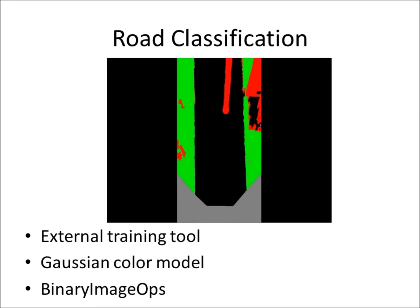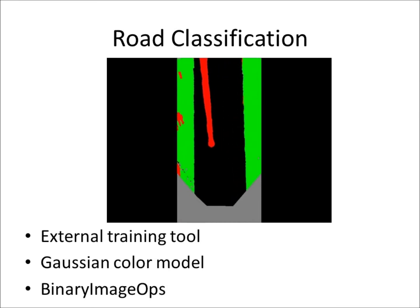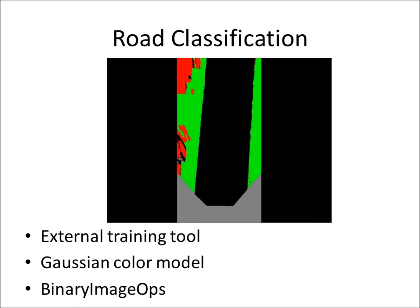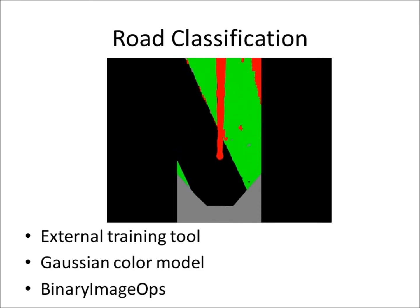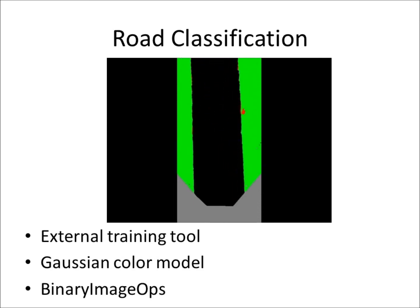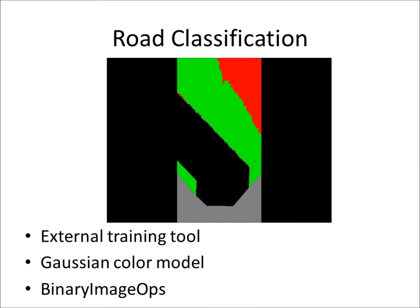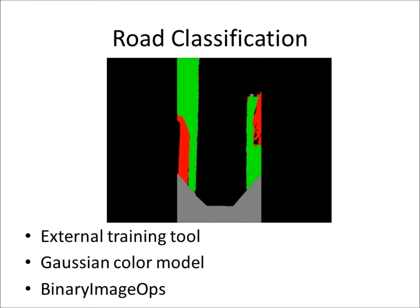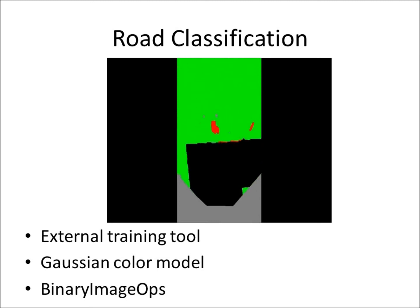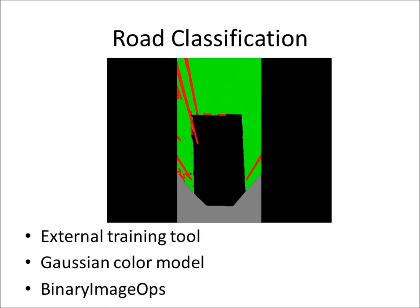The scene was classified to identify traversable and untraversable regions. In this video, black represents the road, green is grass, red is obstacle, and gray indicates unknown. Classification was performed using RGB color information alone. Offline Gaussian models were created using a labeled image. When processing the color overhead view, a chi-squared value was computed for each model to determine if a pixel was a member of that set or not. Binary image operations were used to remove noise and find large clusters.